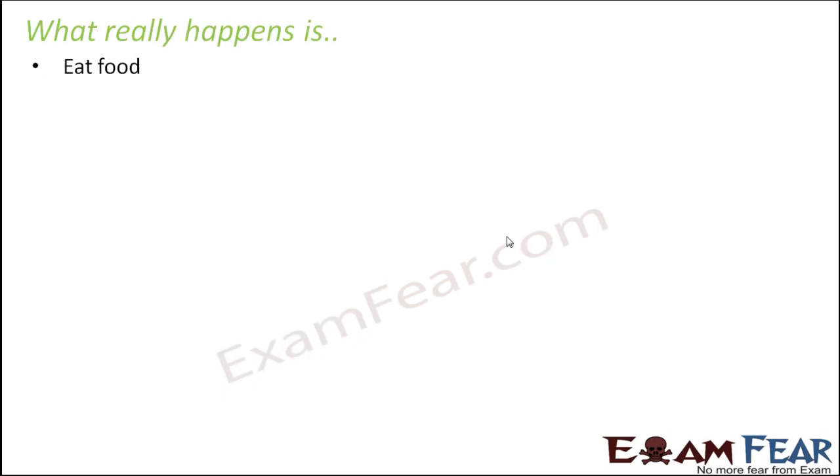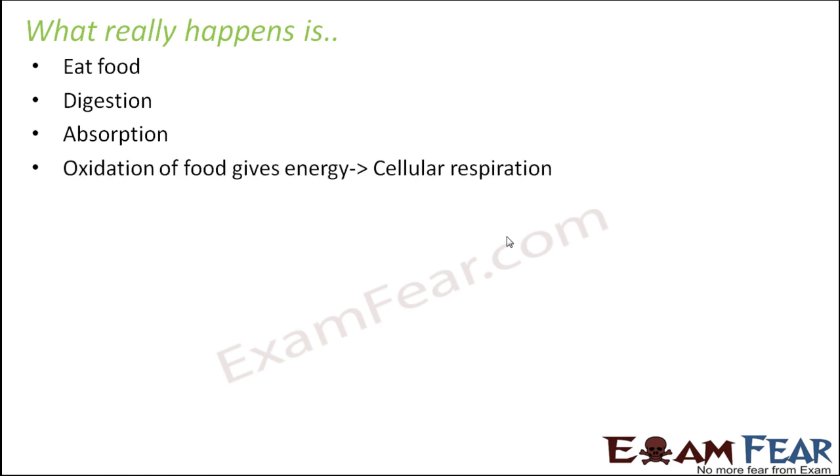Now, what really happens is we eat food. Digestion of food happens. That is, the food passes through the food pipe, through the stomach, through the intestine. It is broken down into the simplest forms by various digestive juices and enzymes. And then it is absorbed because the simplest form of food can be easily absorbed by the cells of our body. And then it is also transported to other parts of the body, to other cells of the body through blood. So that's how the simplest form of food is able to reach all cells of our body.